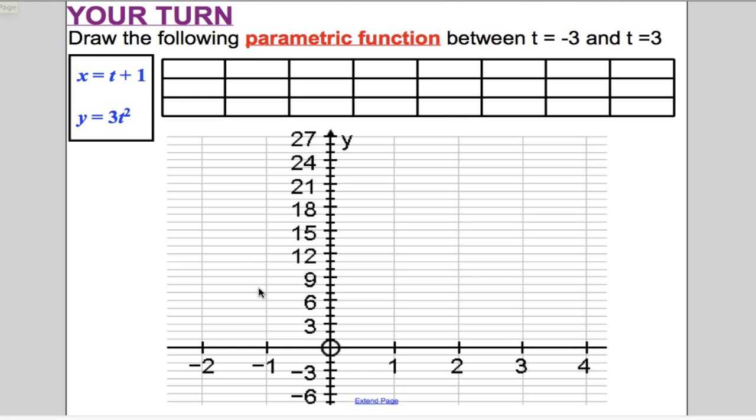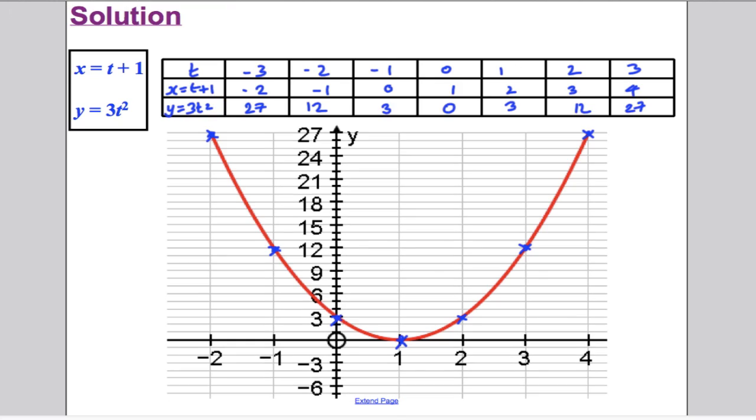I drew the graph out for you. All you had to do was plot on there. Hopefully you labelled this as t, this as x is t plus 1, this as y is 3t squared. And you went from t as negative 3, negative 2, negative 1, 0, 1, 2 and 3. Substituted in and you would have got something that looks like this. That would look like the graph of that parametric function.